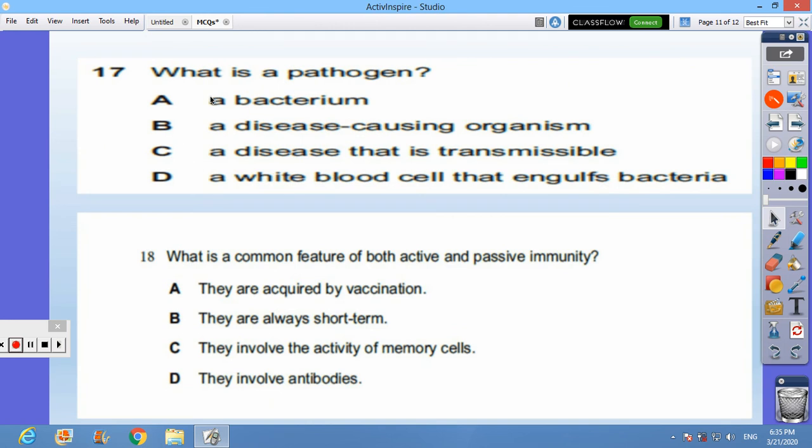Question 17: what is a pathogen? B, a disease-causing organism. Question 18: what is a common feature of both active and passive immunity? The answer is D, that they involve antibodies. Thank you for watching, best of luck.